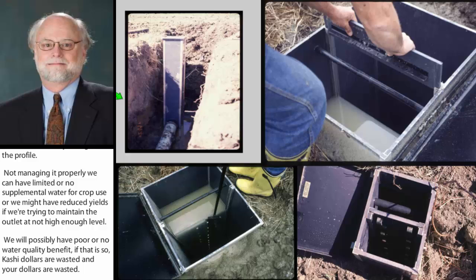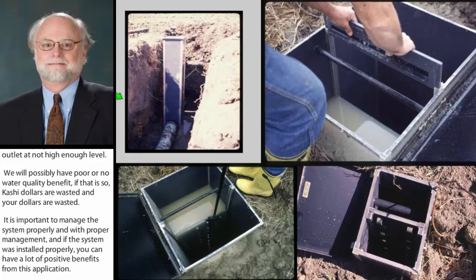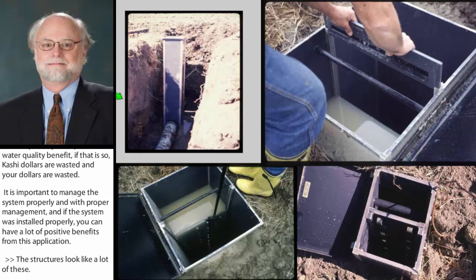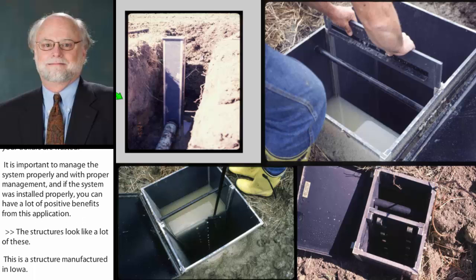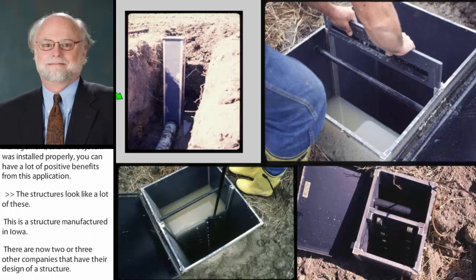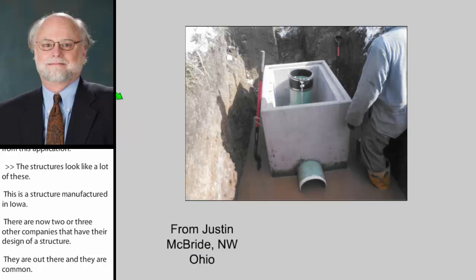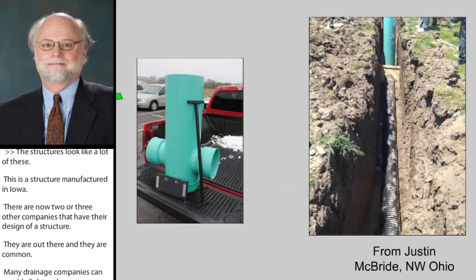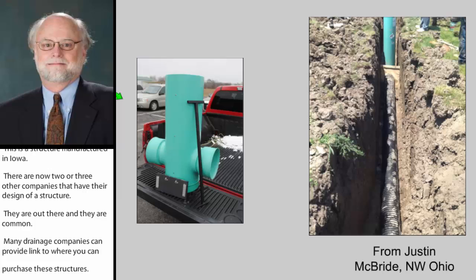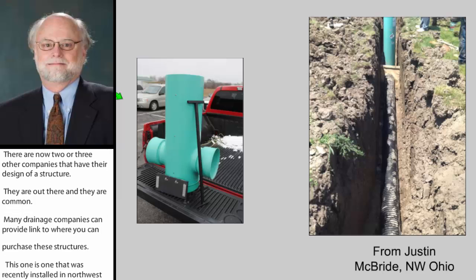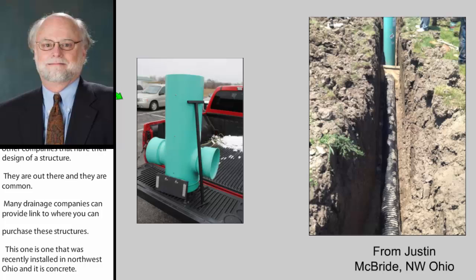The structures look like this — this one is manufactured in Iowa. There are now two or three other companies with their own designs, and they're out there and common. Any drainage tubing company can provide a linkage to where you can purchase these structures. This one is a concrete structure recently installed in northwest Ohio. This is an ADS — Advanced Drainage Systems — product they came out with about two years ago, and it functions very similarly to the Agri-Drain structure in terms of the flashboards that can be moved up and down.